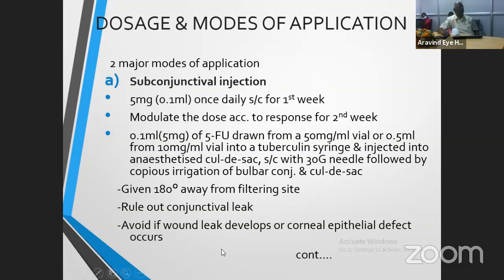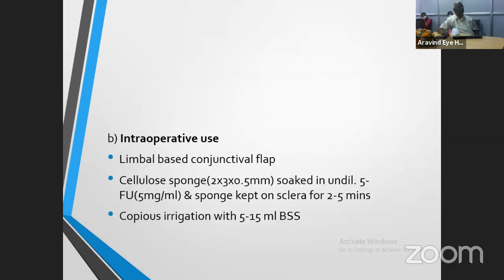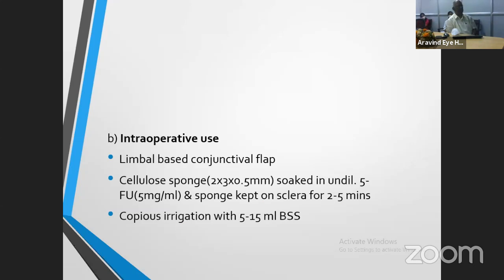Later, instead of subconjunctival injection, we started using a subconjunctival sponge. The same strength — 50 mg/ml — 5-FU is soaked in a sponge, kept in the subconjunctival space for about 2 to 5 minutes depending on indication (primary or secondary glaucoma), and then the area is thoroughly irrigated with BSS. In the postoperative period, if the patient needs any anti-metabolite, we can give a subconjunctival injection. Another use of 5-FU is during needling in cases with failed filtering bleb — you can give 5 mg of 5-FU at the point of needling.